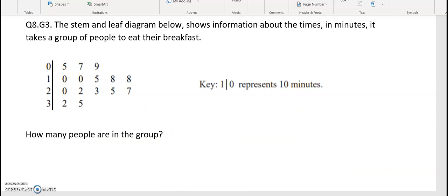The stem and leaf diagram below shows information about the times in minutes it takes a group of people to eat their breakfast. So we have this question. How many people are there in the group? So we've got this 0, 1, 2 and 3, which is the first digit of the number. So this is 0, 5, which means just 5 minutes. And this is 0, 7, so 7 minutes. 0, 9, 9 minutes. This is 10 and then 10, 15, 18, 18, 20, 22, 23, 25, 27, 32 and 35. So the actual values can be counted here. So 1, 2, 3, 4, 5, 6, 7, 8, 9, 10, 11, 12, 13, 14, 15. So 15 values, 15 people in the group.